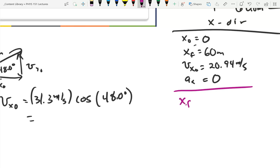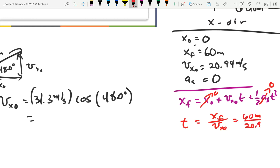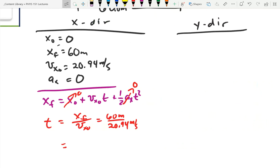So, now, we'll just say xf equals x0 plus vx0 t plus one half ax t squared. But we know that ax is zero. And x0 is zero. So, solving for time is trivial. Time is equal to xf over vx0 equals 60 meters over 20.94 meters per second equals slightly less than three seconds. What did we get? 2.865. My estimation failed.